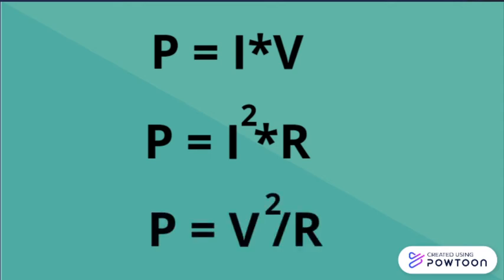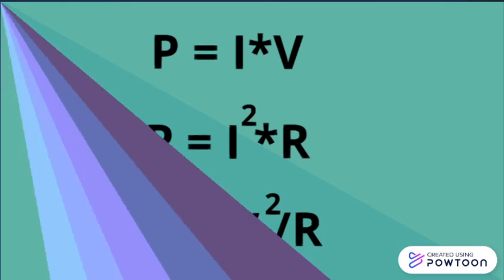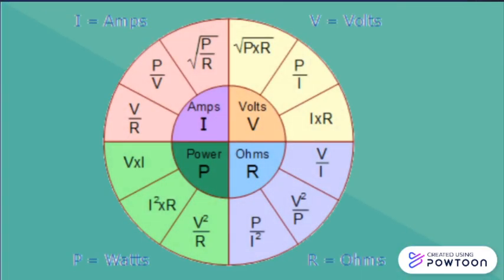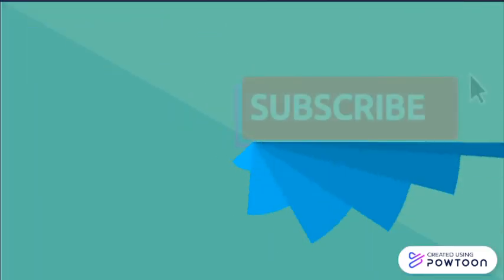Or current squared times resistance, or voltage squared divided by the resistance. From this image we can calculate either of the four: the power, or current, voltage, or the resistance from these equations.